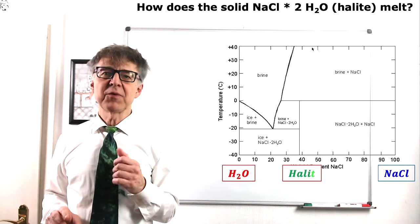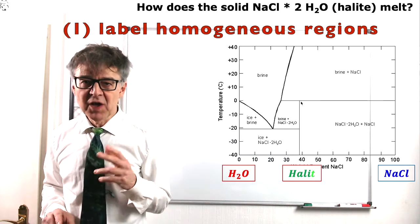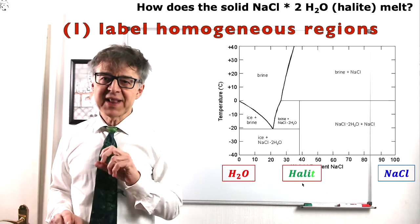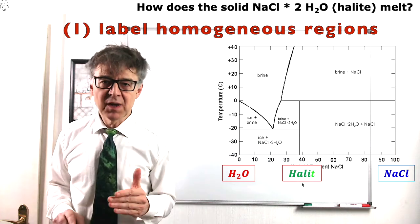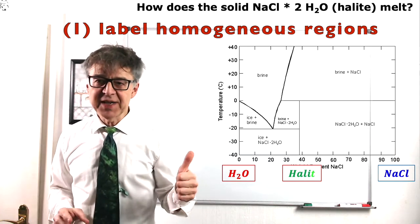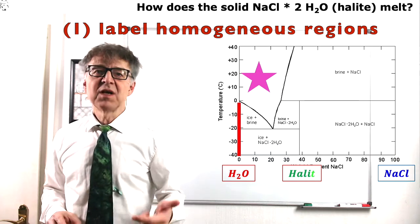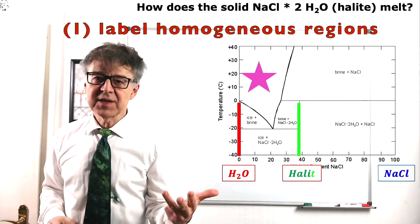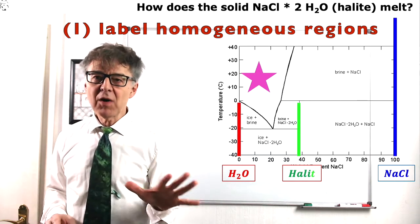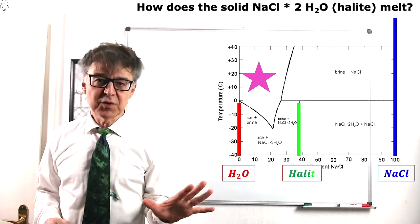Discussing this diagram, we follow our usual path. First of all, we search for and label the homogeneous regions. Those are the liquid phase, the brine, solid H2O ice, solid halide, and solid NaCl. All other regions are heterogeneous.